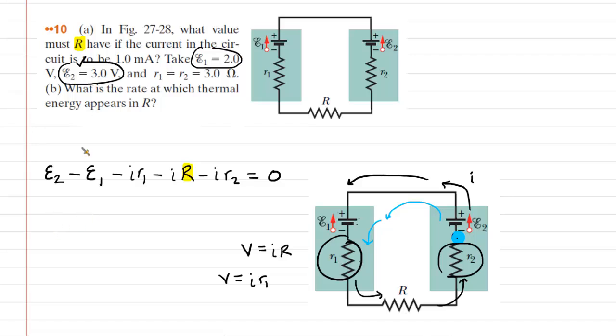So we're going to plug in for E2. We're going to plug in the three volts. We're going to omit units for clarity right now as well. Minus E1, which was two volts. Minus the current. Now, be careful here. The current is given in milliamps. So one milliamp requires us to move the decimal three places to the left. So that's 0.001 amps. So that's what we'll be plugging in for the current.